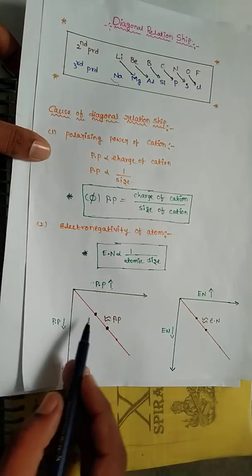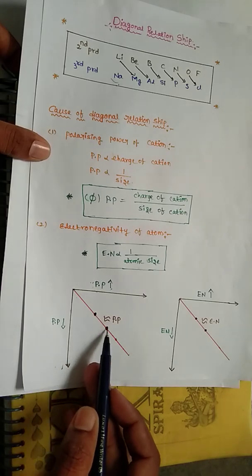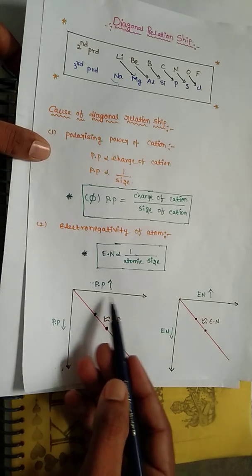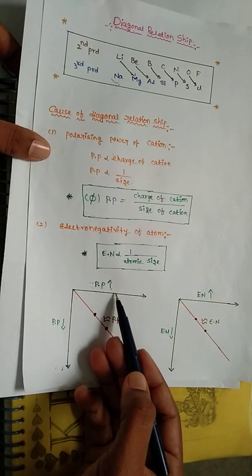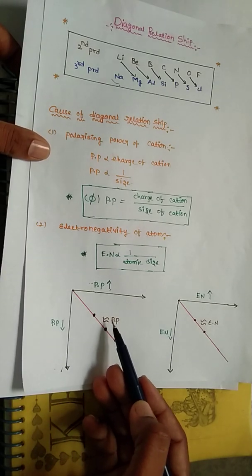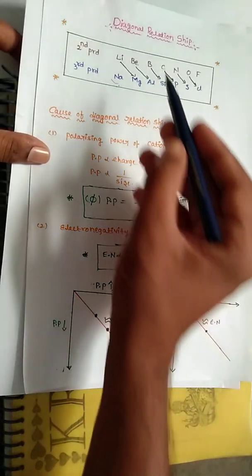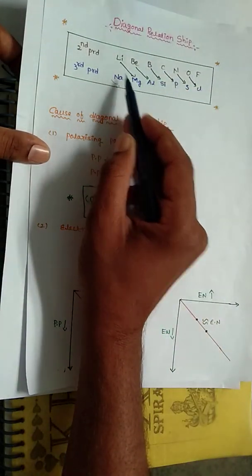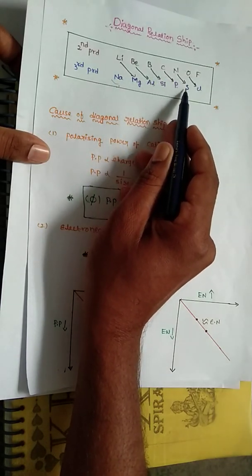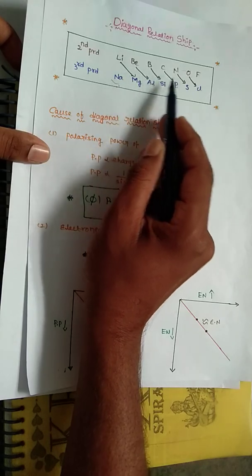The diagonally located elements — spanning the second and third periods — have approximately the same polarizing power of the cation. Because these two elements have similar polarizing power, they exhibit similar chemical properties. This is why pairs such as lithium-magnesium, beryllium-aluminum, boron-silicon, carbon-phosphorus, nitrogen-sulfur, and oxygen-chlorine are called diagonal relationship pairs.